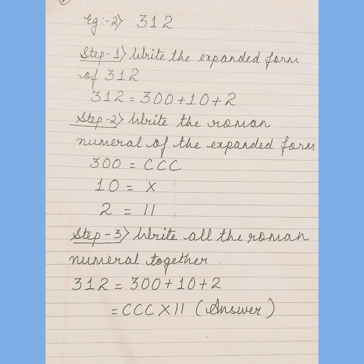Now example number 2: 312. The first step is write the expanded form. 312 is equal to 300 plus 10 plus 2. Now write the Roman numeral. 300 is equal to CCC, 10 is equal to X, and 2 stands for II.